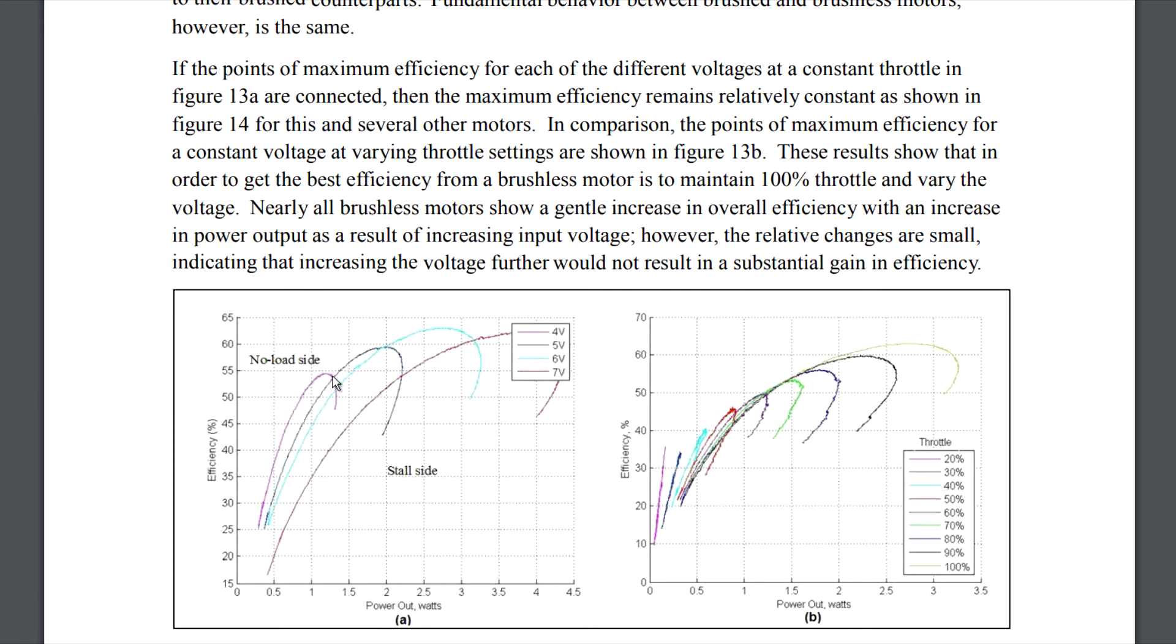And right where the motor starts dropping off in power, then the next highest voltage picks up. And the area that the 5 volt test is more efficient than the 4 volt test is the area where the 4 volt test is literally incapable of making any of that power.